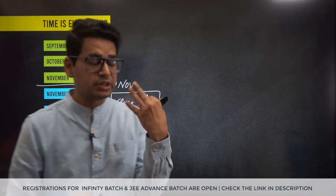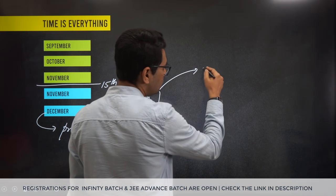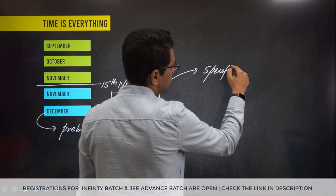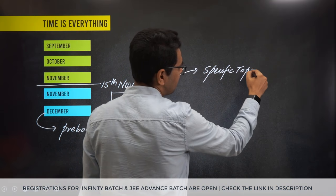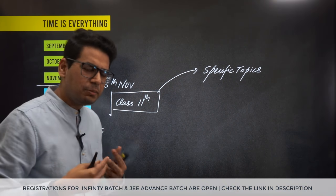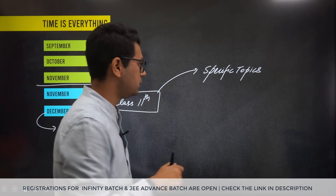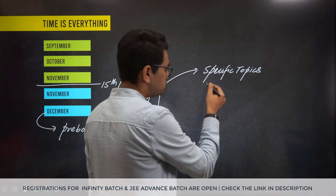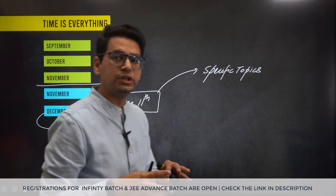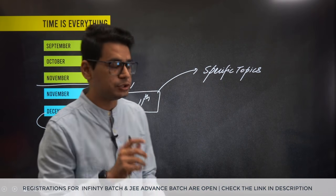Structure also comes into place here. When we talk about class 11th, we have to do specific topics only. For example, in maths — in coordinate geometry, we don't need to go into great detail; just basic level coordinate geometry is required. So there are specific topics. It will feel like a lot, but if you work in a structured way, it is achievable.